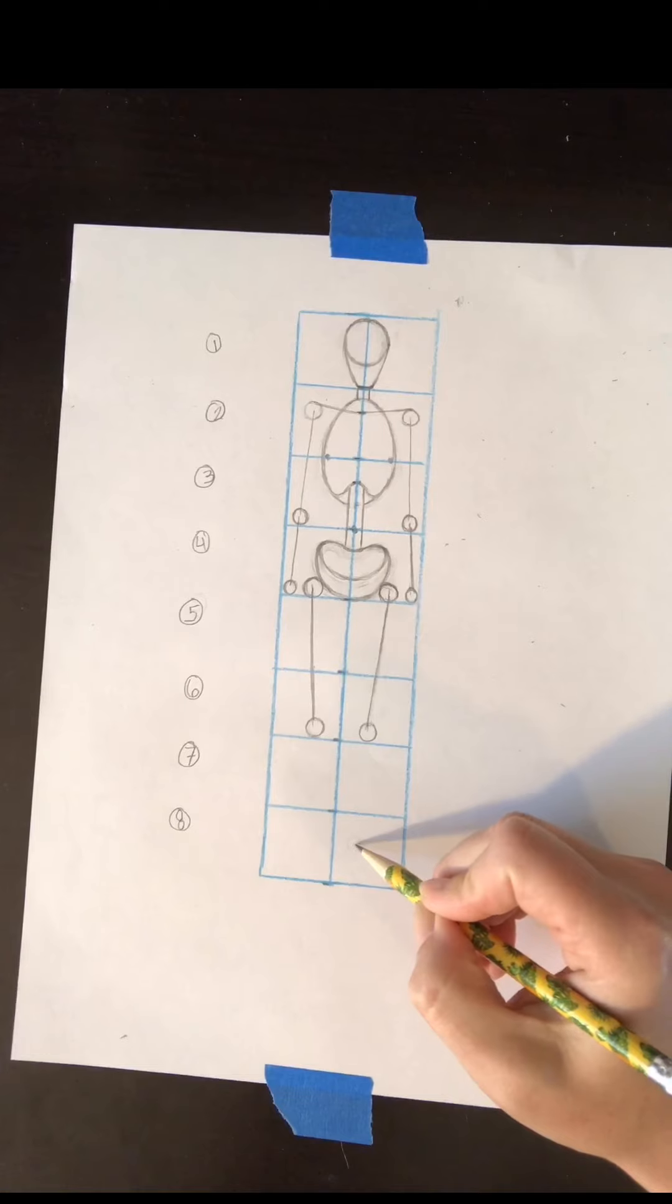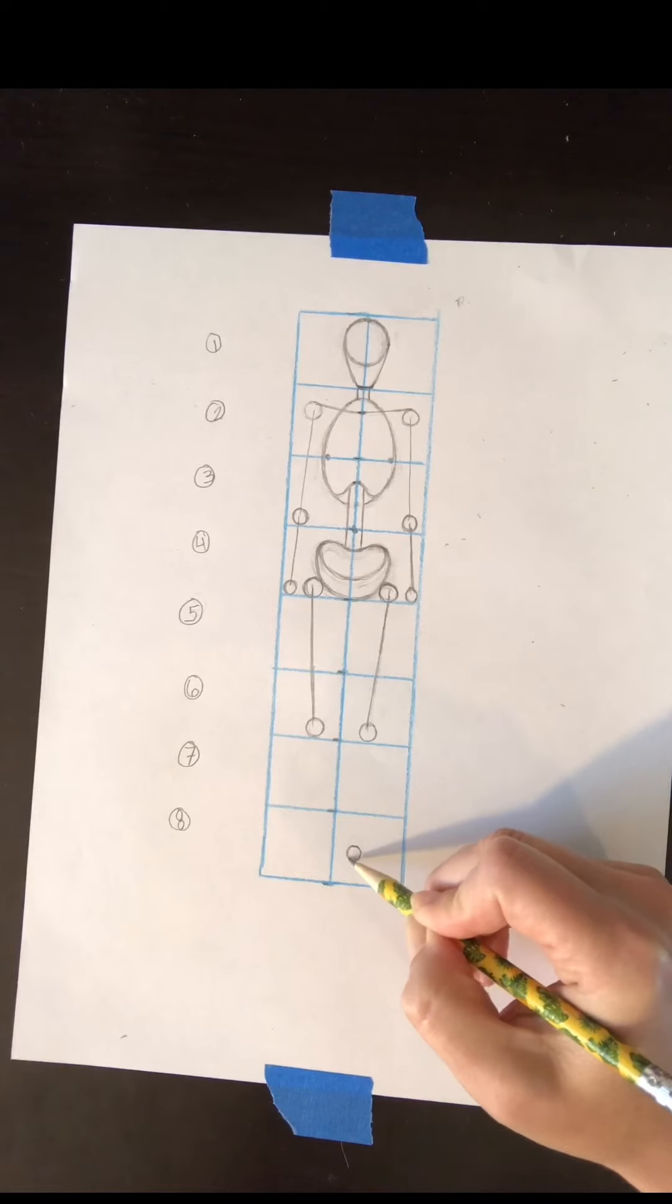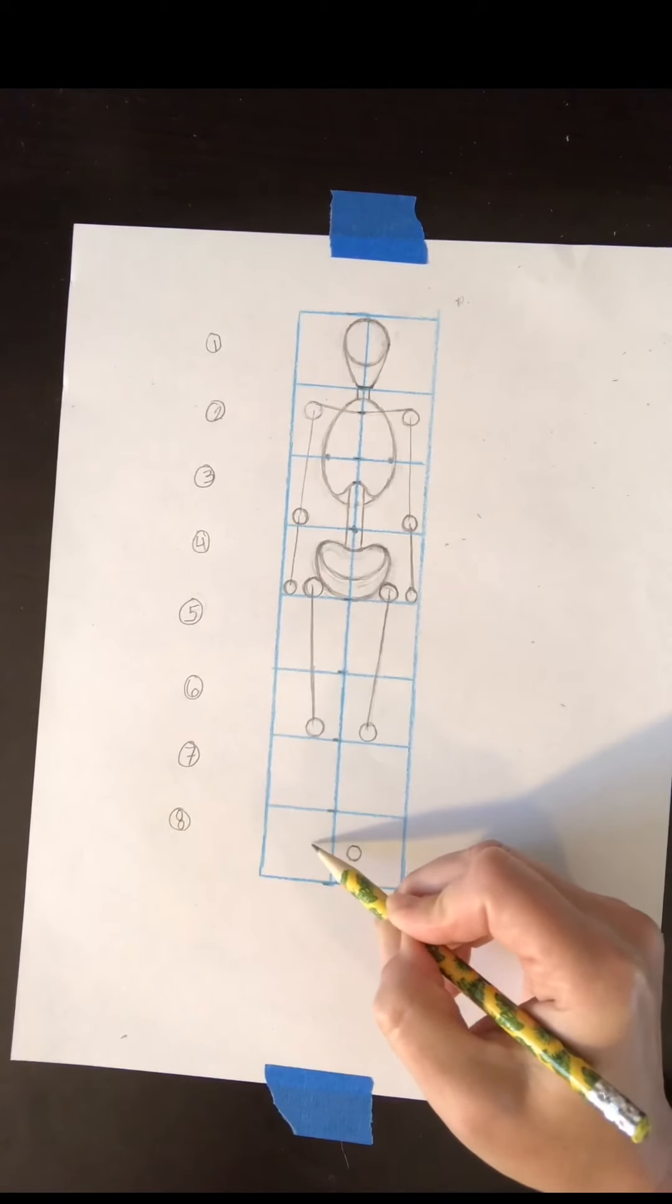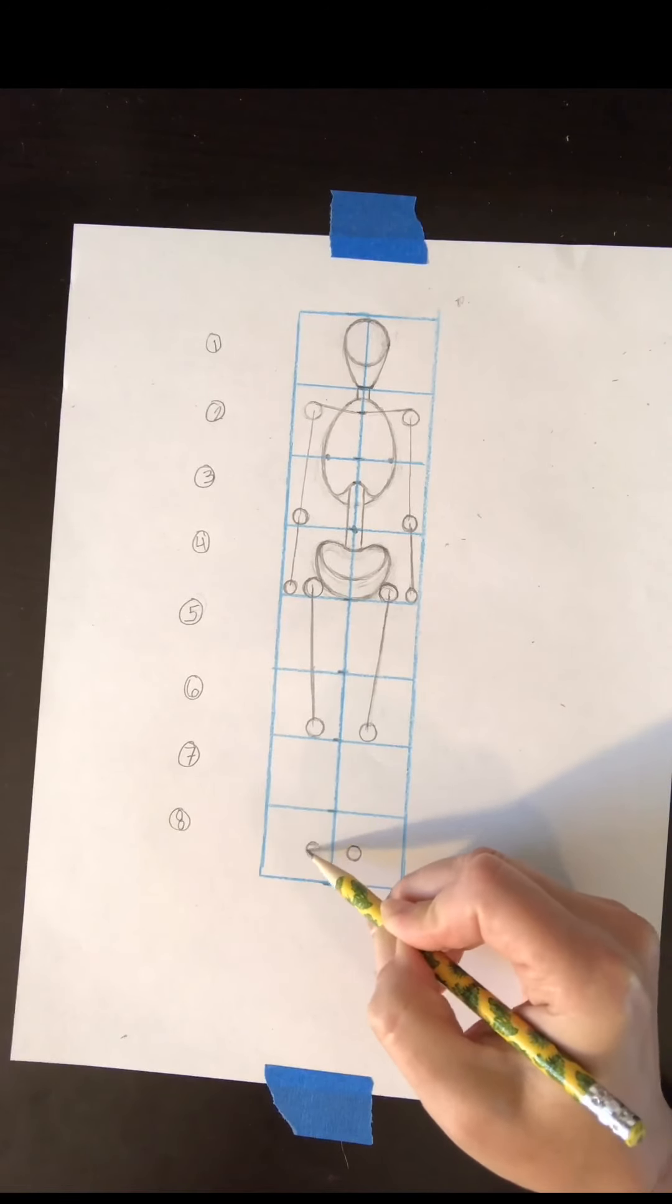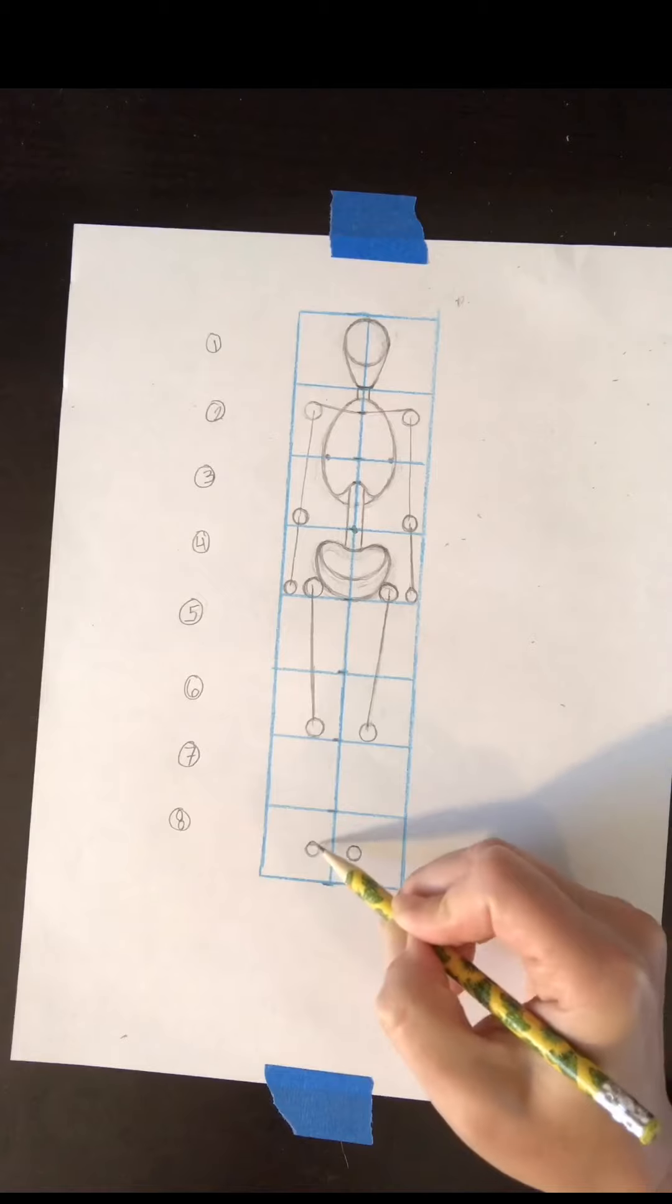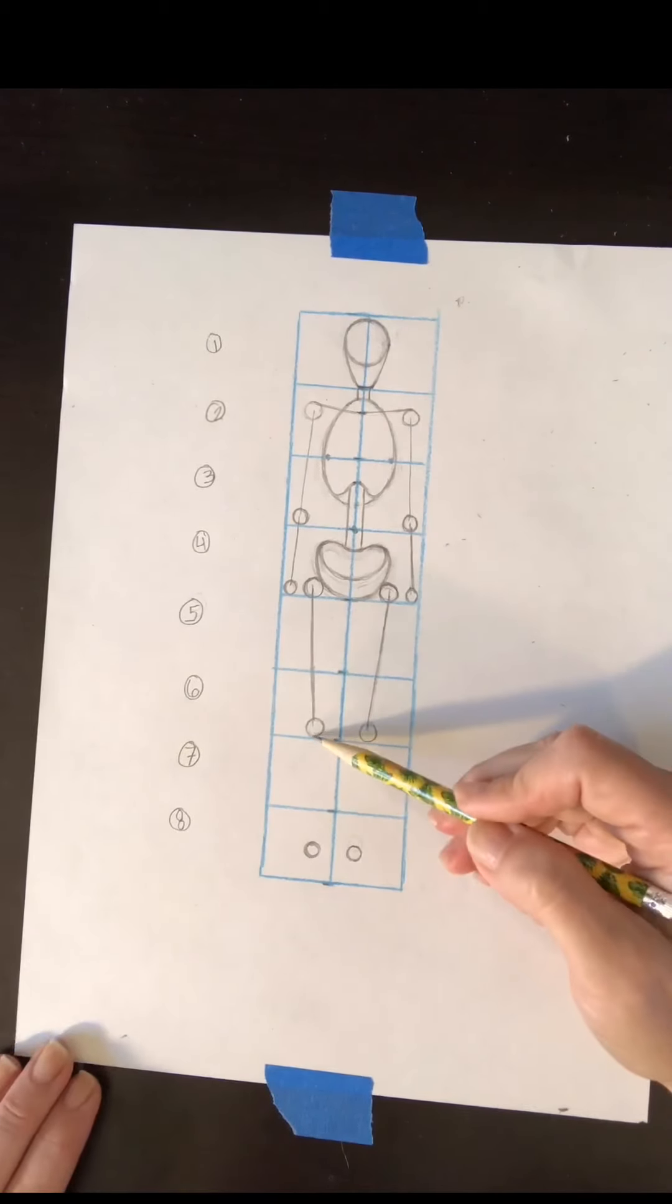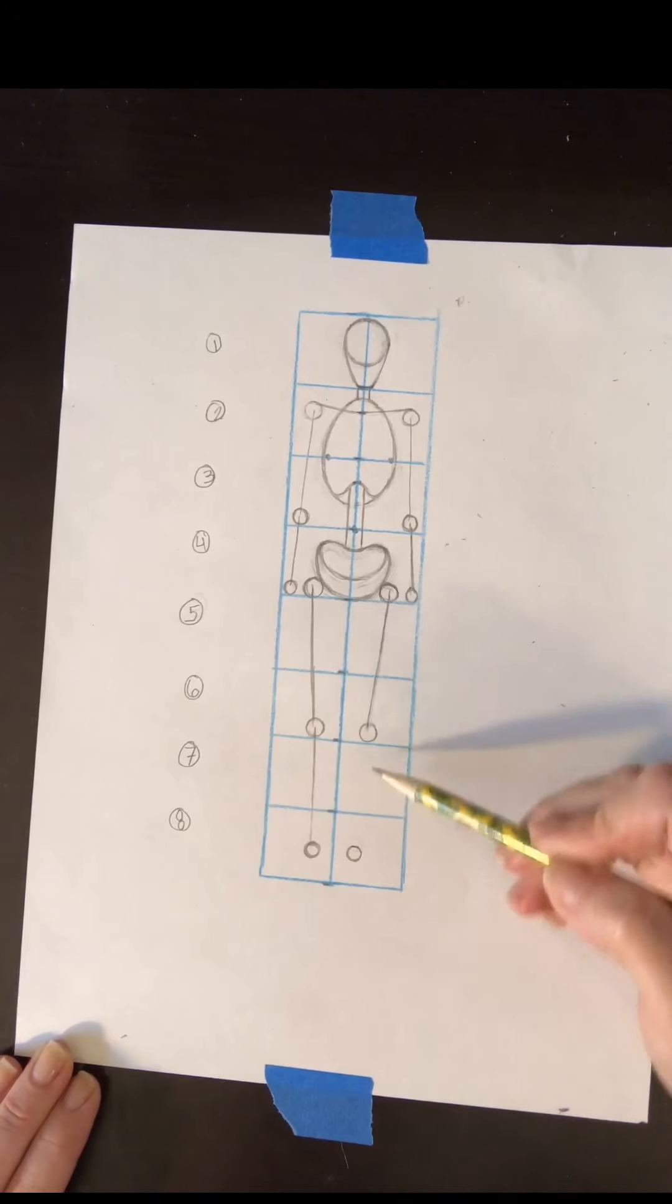So let's make the top of that ankle joint at the halfway mark of head eight. From top to bottom there's the halfway mark and that's going to be the top of the ankle. So again let's connect our knees to our ankle joints with a single straight line representing the bones in the legs.